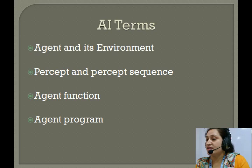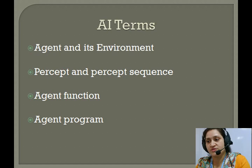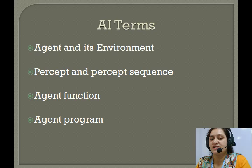Now let's discuss the types of environment. We have six types of environment. The first one is discrete and continuous, observable and partially observable, static and dynamic, single agent and multi-agent, deterministic and non-deterministic, and episodic and non-episodic.